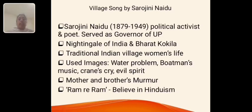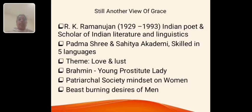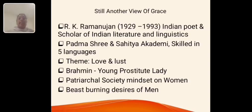She also applied her mythological belief — Ram, Ray, Ram — these kinds of words express her mythological belief. The next poem, Still Another View of Grace, is by A.K. Ramanujan. He was born in 1929 and died in 1993. He was an Indian poet and scholar of Indian literature and linguistics. He received a Padma Shri, a Sahitya Academy Award, and was skilled in nearly more than five languages. In this poem he discussed the concept of love and lust — how a Brahmin boy has feelings for a young beautiful woman — and how men in society dominate women and look at women as objects of lust.